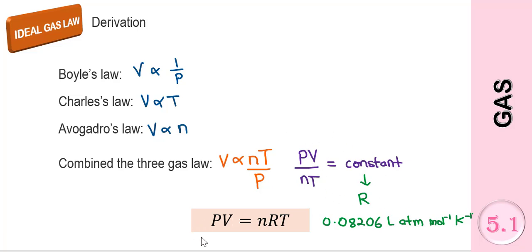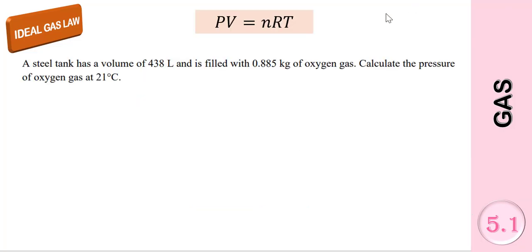Rearranging this formula, we will get PV equals nRT. So for the ideal gas, we are going to use this formula in our calculation. Let's have a look at an example.